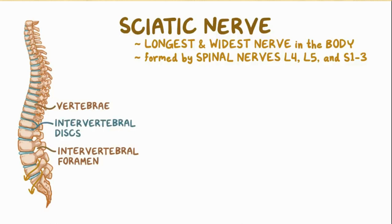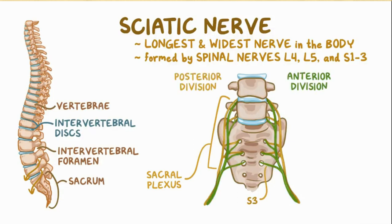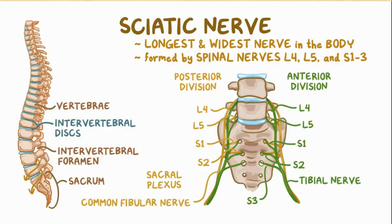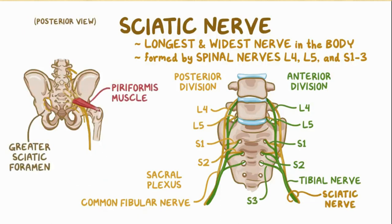These nerves travel to the area in front of the sacrum and join to make the sacral plexus. All nerves in the plexus except S3 are split into anterior and posterior divisions. Anterior divisions of L4, L5, S1, S2, and the entire S3 nerve create the tibial nerve, while posterior divisions of L4, L5, S1, and S2 form the common fibular nerve. These two nerves are bound together by connective tissue to make up the sciatic nerve, which then passes beneath the piriformis muscle and through the greater sciatic foramen, formed by the pelvic bone, sacrospinous, and sacrotuberous ligaments.